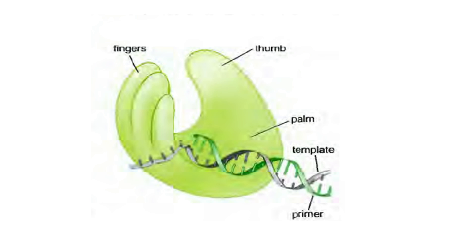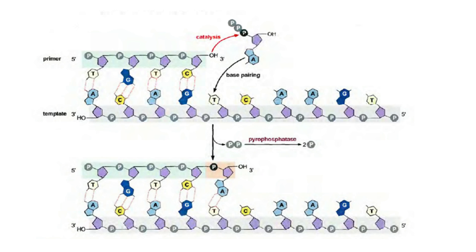The structure of DNA polymerase resembles a closed hand — it has a palm domain, finger domain, and a thumb domain. The palm domain binds magnesium and zinc ions for catalysis. The magnesium ions play an important role in phosphodiester bond formation between the OH group and the incoming dNTP. In this reaction, the hydrogen of the hydroxyl group is removed to form an oxyanion, which then reacts with the alpha-phosphoryl group of the incoming dNTP to complete the reaction.